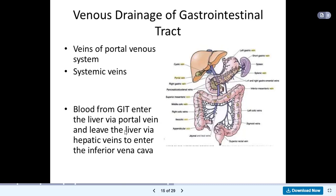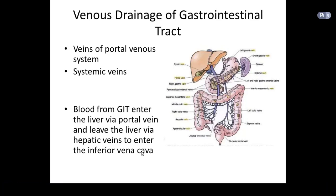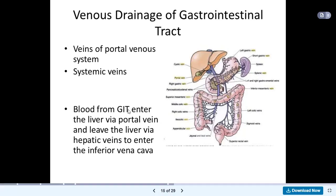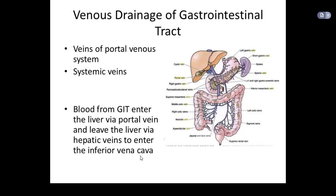Blood leaves the liver through the hepatic veins to enter the inferior vena cava. So in the gastrointestinal tract we have different organs — the stomach, intestines, spleen, pancreas, and liver. Blood from the GIT, meaning from the stomach and intestines, enters the liver through the portal vein. Then blood is carried from the liver through the hepatic vein, which joins the inferior vena cava to return the blood to the heart.